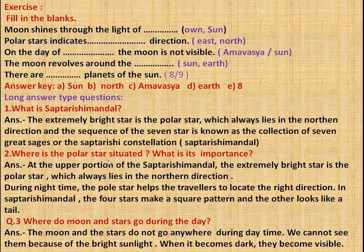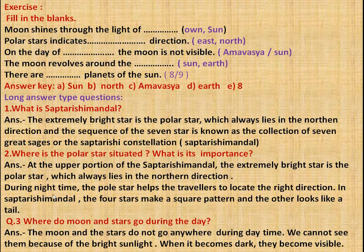Where is the polar star situated and what is its importance? At the upper portion of the Saptarishi Mandal, the extremely bright star is the Polar Star (Dhruv Tara), which always lies in the northern direction. During night time, the polar star helps travelers to locate the right direction. In the Saptarishi Mandal, four stars make a square pattern and the others look like a tail.